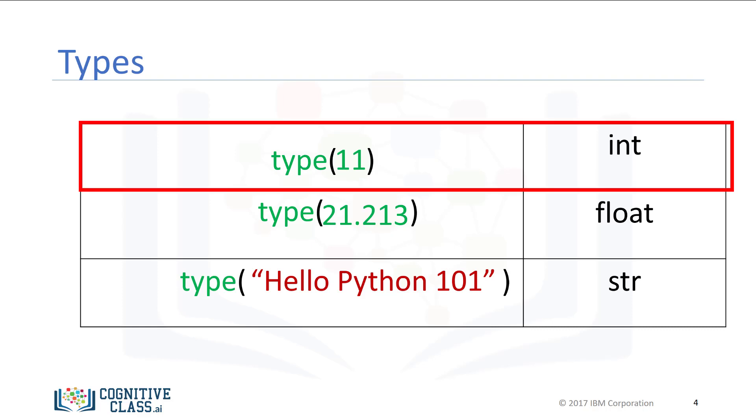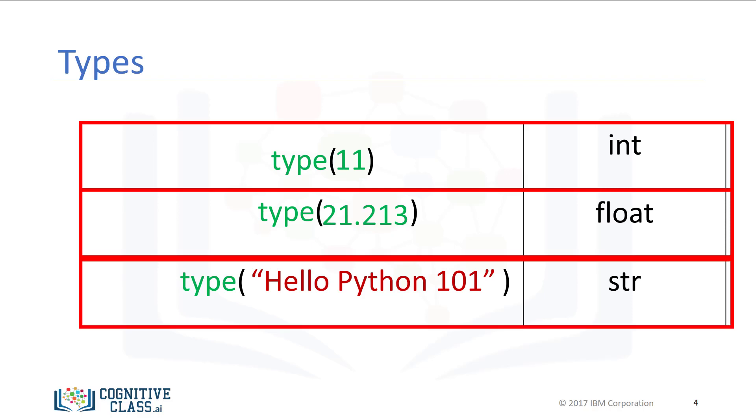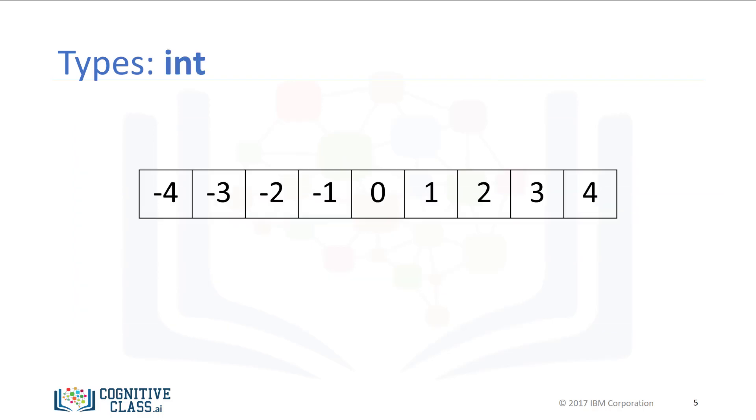We can have int, which stands for an integer, and float, that stands for float, essentially a real number. The type string is a sequence of characters. Here are some integers. Integers can be negative or positive. It should be noted that there is a finite range of integers, but it is quite large.